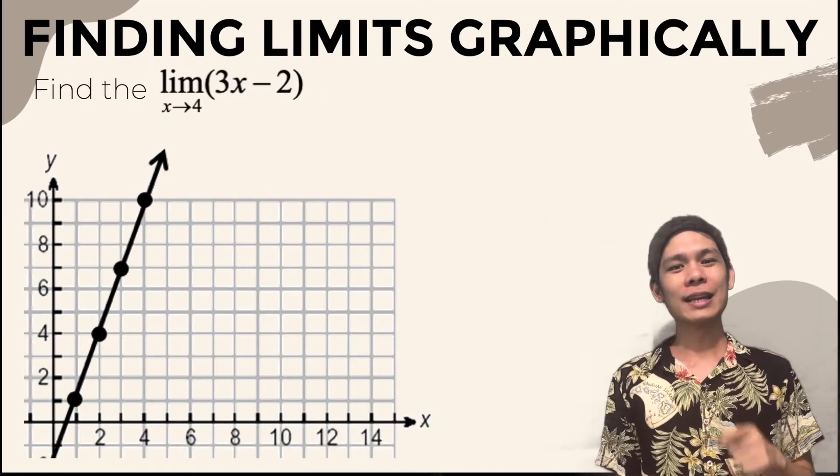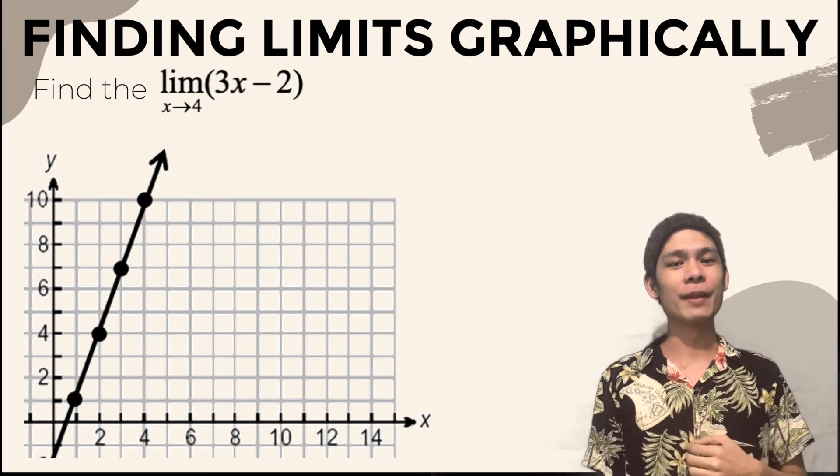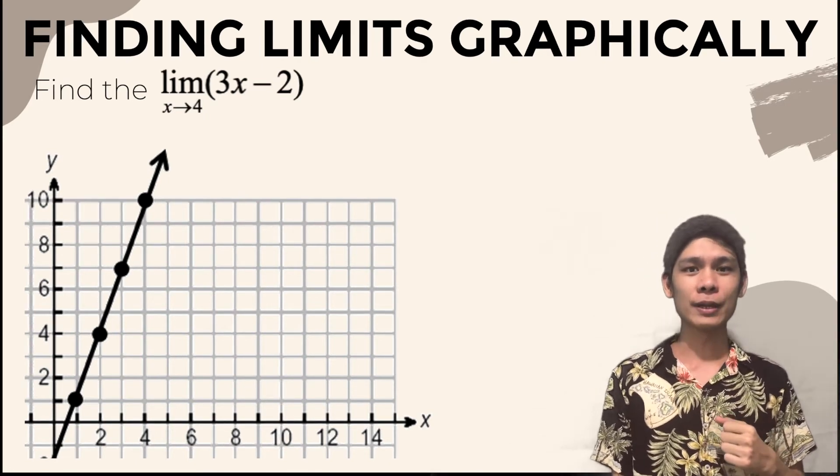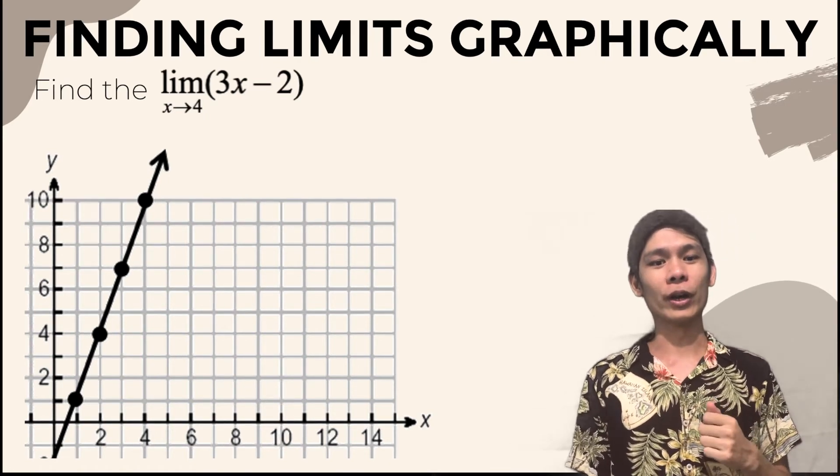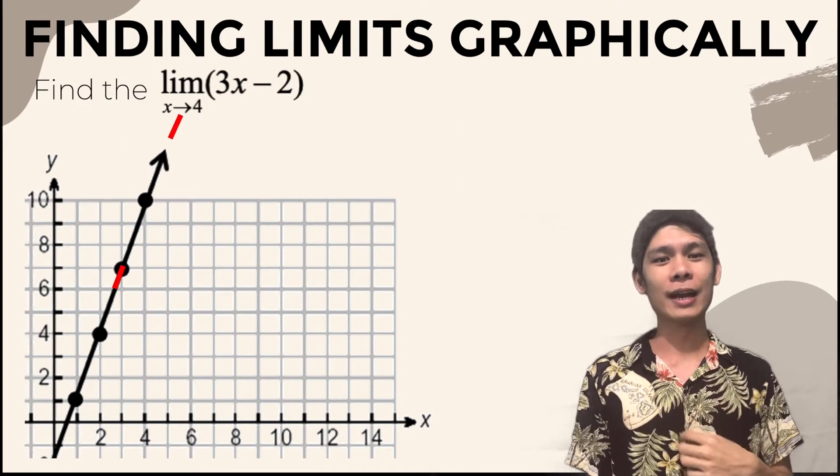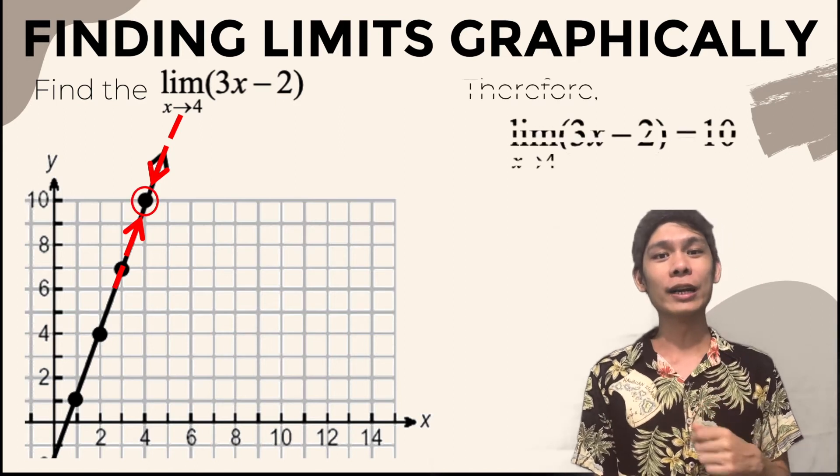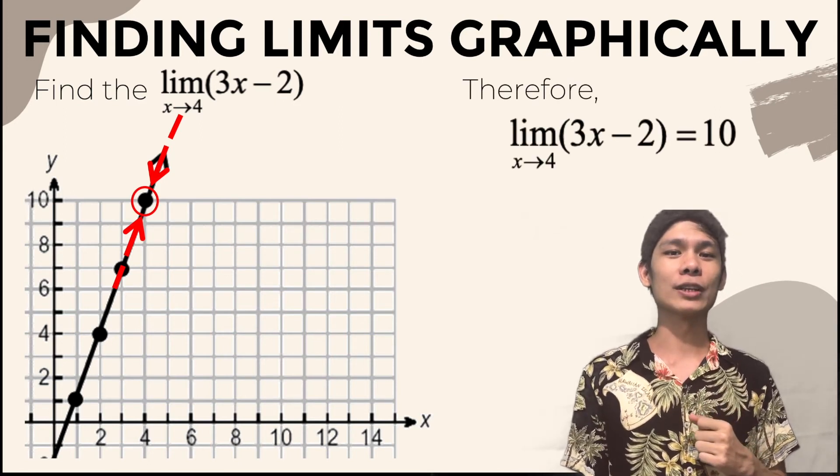For example number one, let's find the limit of the function 3x minus 2 as x approaches 4. Analyzing the graph of the function, focus where x is equal to 4. Then trace along the graph from both sides where x is equal to 4. As you notice, the height of the graph approaches 10. Therefore, we say that the limit of the function is 10.